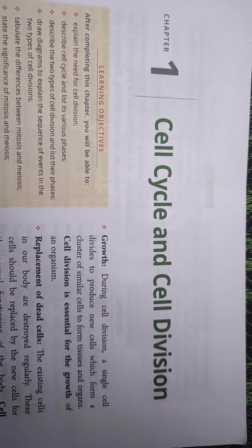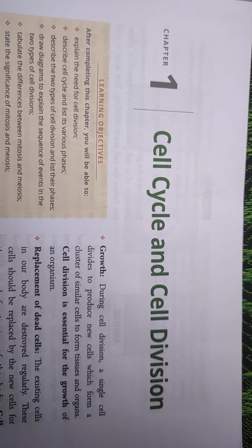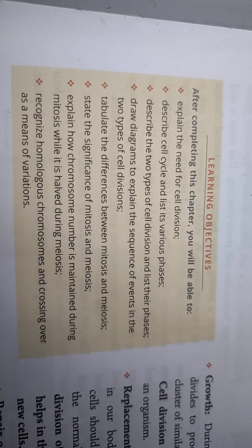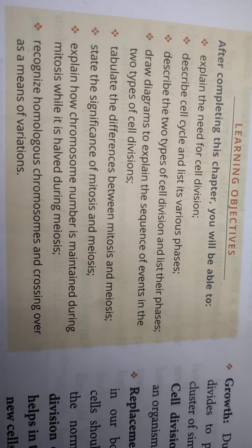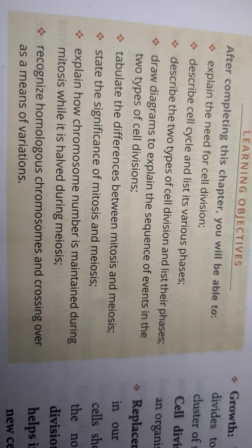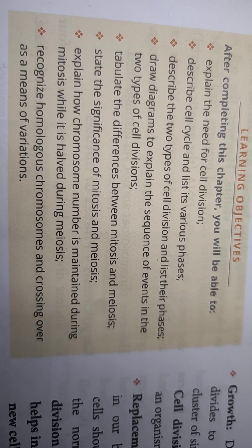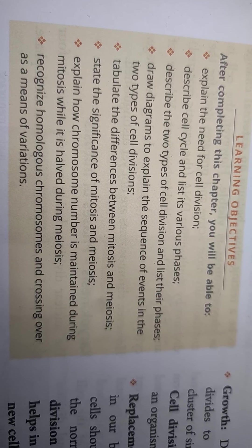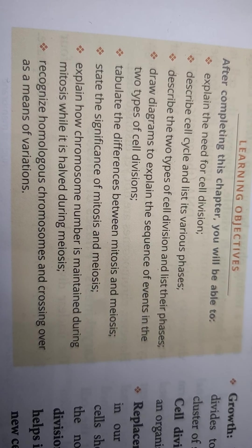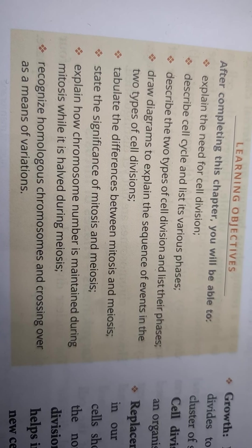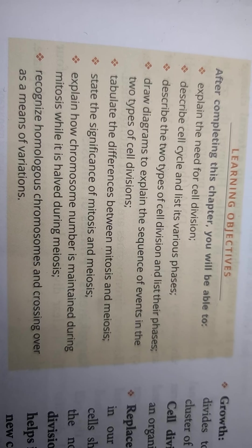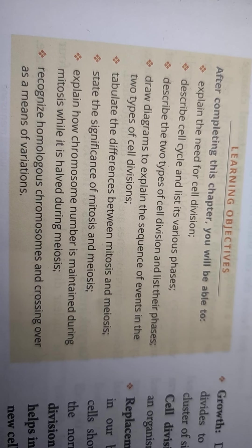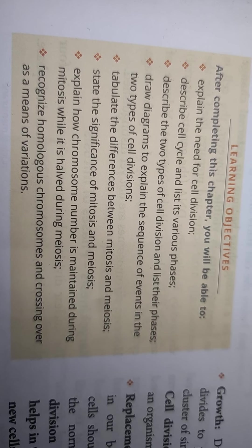Assalamu alaikum warahmatullahi wabarakatuh. Today we will start Chapter 1: Cell Cycle and Cell Division. The learning objectives of the chapter are — after completing this chapter you will be able to explain the need for cell division, describe the cell cycle and list its various phases, describe the two types of cell division and list their phases.